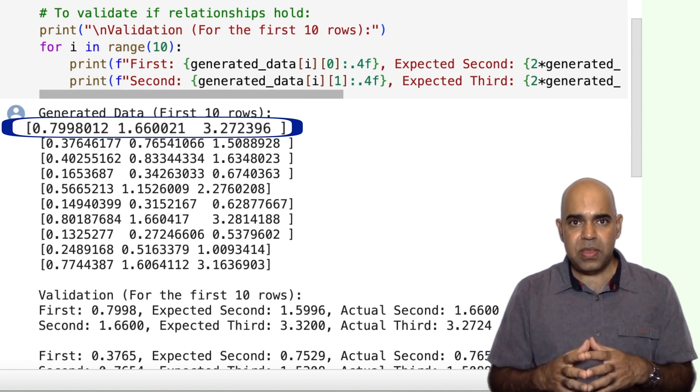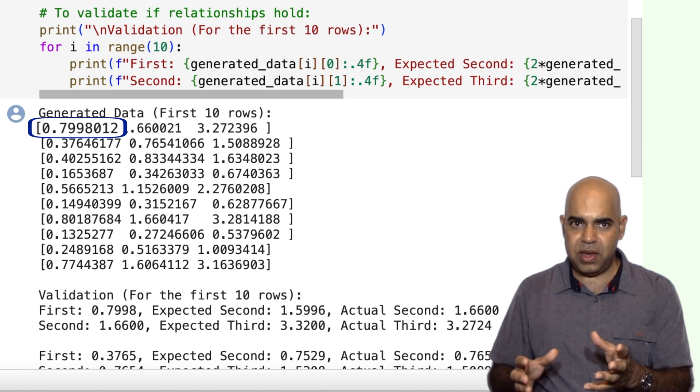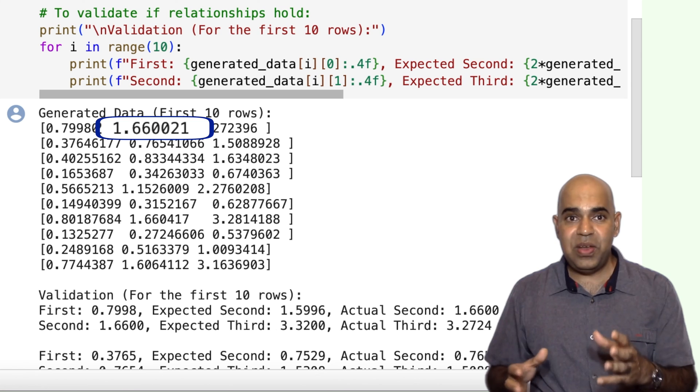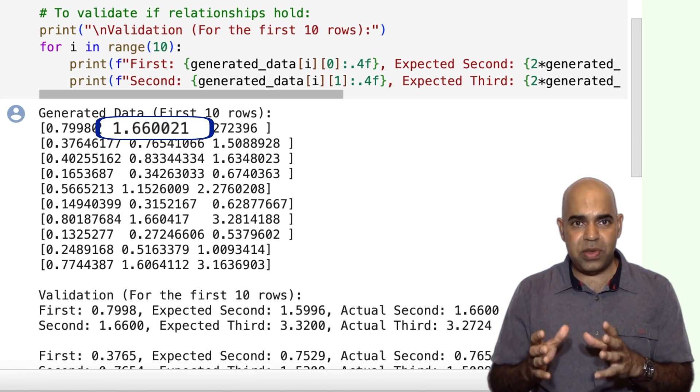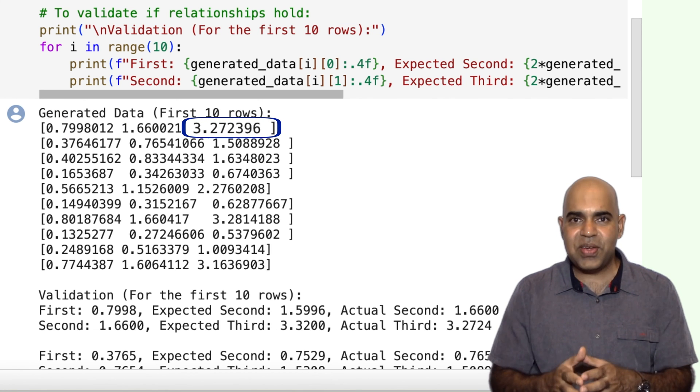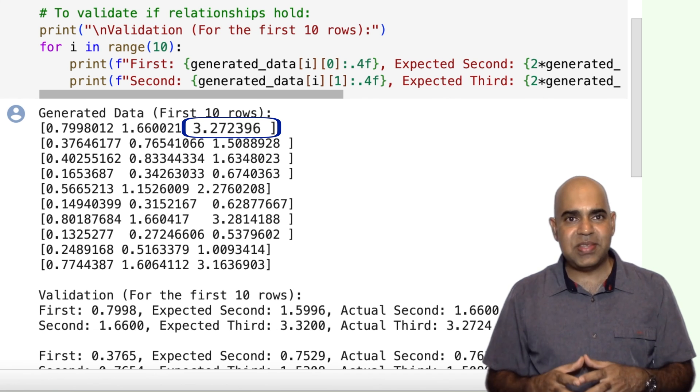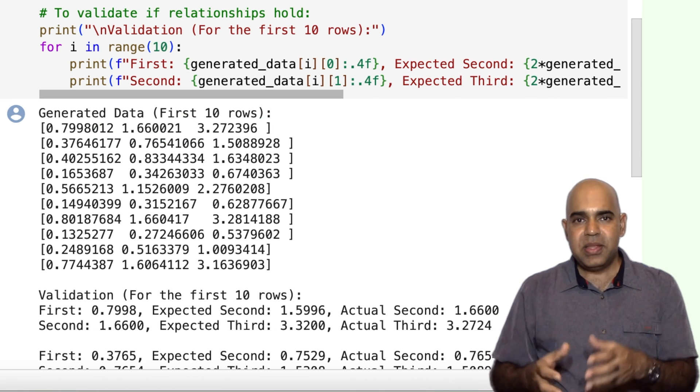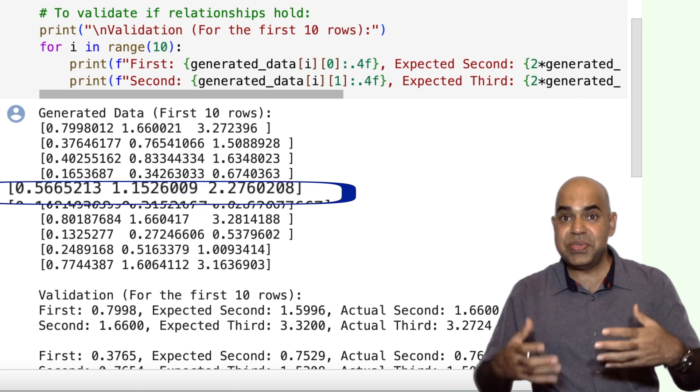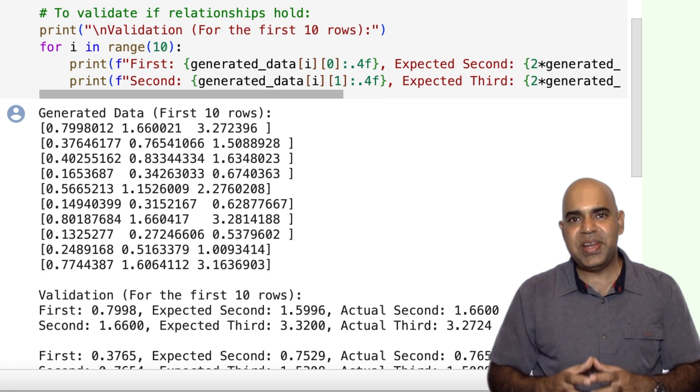In the first row, the value in the first column is 0.7998. The second column has a value of 1.660, which is almost twice the first. The value in the third column is 3.2724, which is almost twice the value in the second column. The pattern continues for the other rows, showcasing that the generator can approximate the feature relationships of our original synthetic data set.